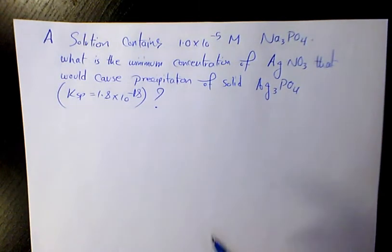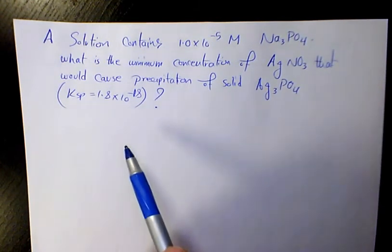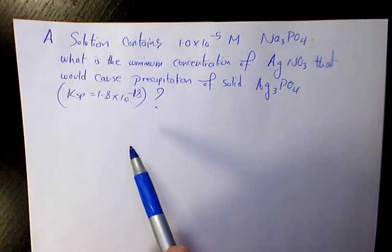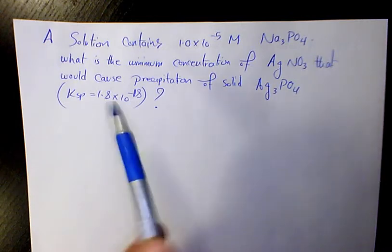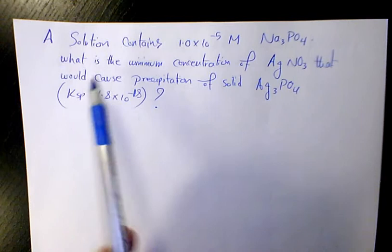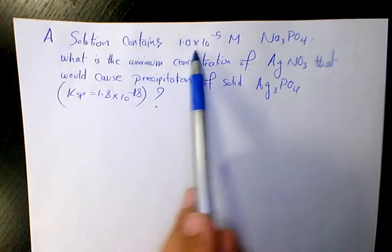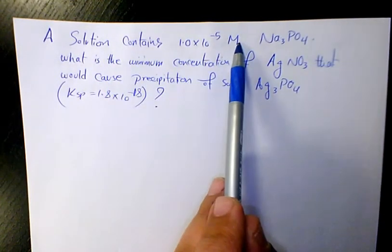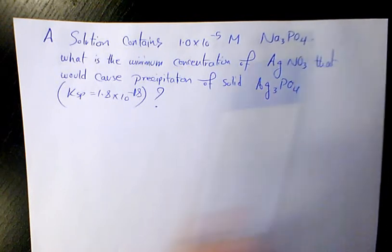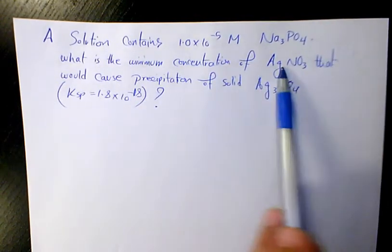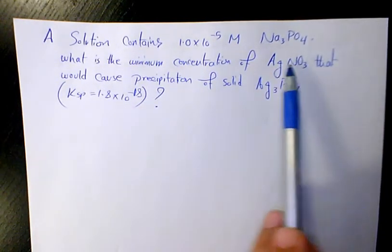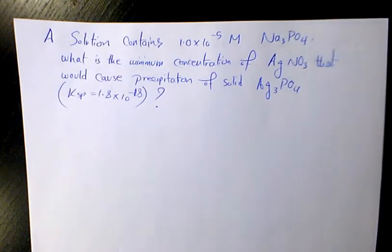What's up guys, this is Massey, welcome to another video. In this video I want to talk about solubility and precipitation. The first example: a solution contains 1×10⁻⁵ molar of sodium phosphate. What is the minimum concentration of AgNO₃ (silver nitrate) that would cause precipitation of solid silver phosphate? The Ksp for silver phosphate is 1.8×10⁻¹⁸.